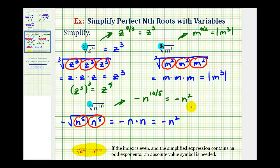I do want to add a caution: if you haven't learned how to do this yet, please don't use it, and it only works if we have perfect nth roots, meaning it simplifies perfectly — which we'll find very shortly is not always the case. Okay, I hope this was helpful.